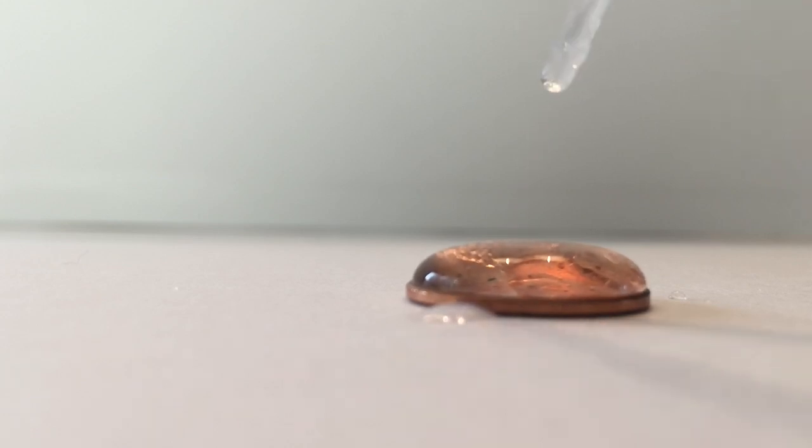Water's cohesion and surface tension are special because of the hydrogen bonds. Hydrogen bonds are formed by the hydrogen atoms in one molecule being attracted to the oxygen atoms in another molecule.